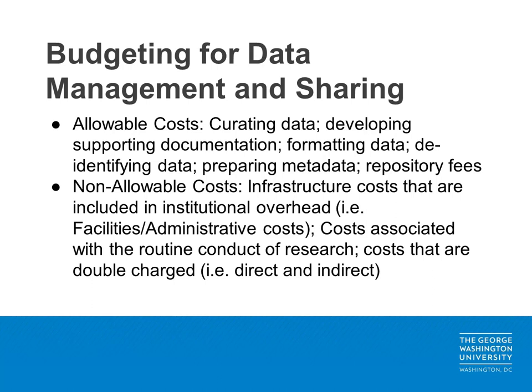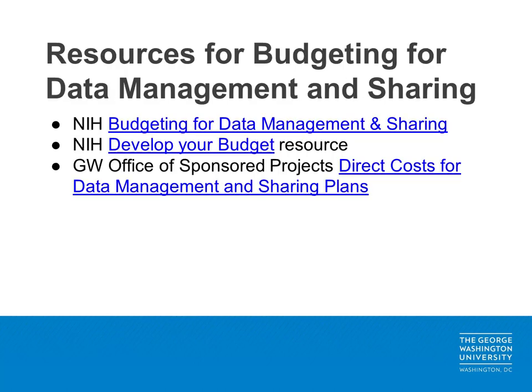Costs which are not allowed include infrastructure costs included in institutional overheads such as facilities, costs associated with the routine conduct of research, and costs that are doubly charged as both direct and indirect costs. The NIH Budgeting for Data Management and Sharing and the NIH Develop Your Budget resources can be helpful in getting started.